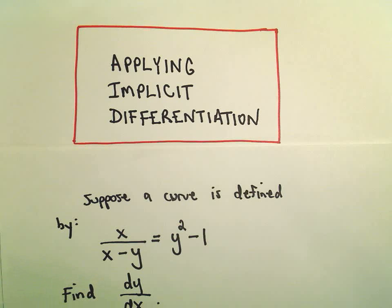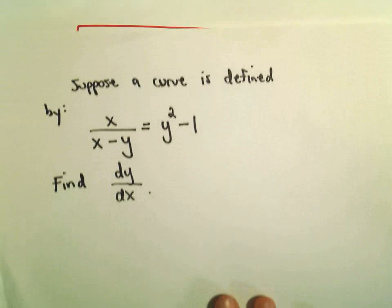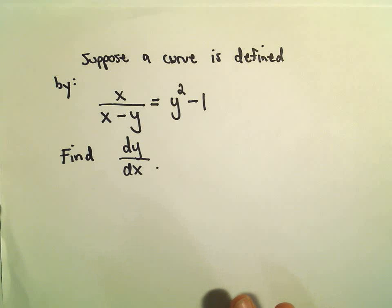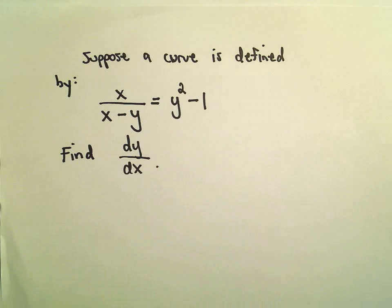Okay, so here we're going to do another example involving implicit differentiation. Suppose we've got the curve given by x over x minus y equals y squared minus 1, and we want to find dy dx.